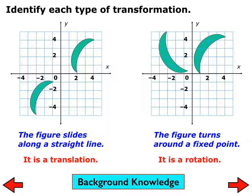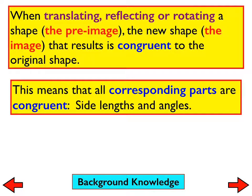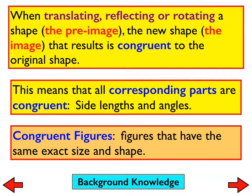We've talked about what they look like, and these four problems are where we're headed today. Remember, when translating, reflecting, or rotating, we end up with congruent shapes. That means the corresponding side lengths are the same — they're congruent — and the corresponding angles are also congruent in measure.